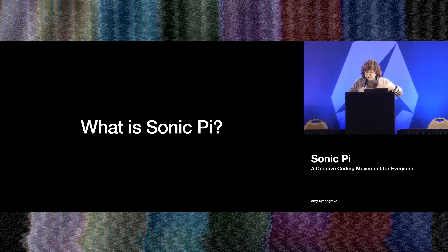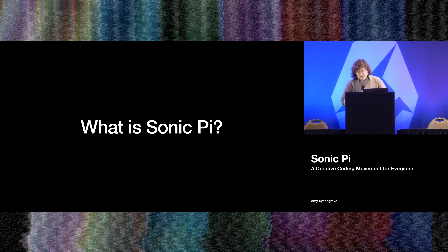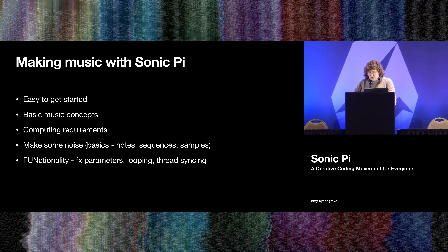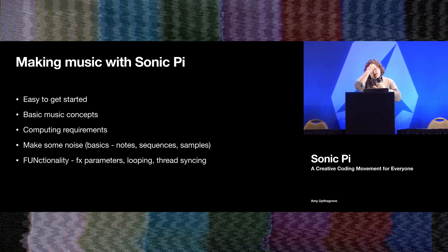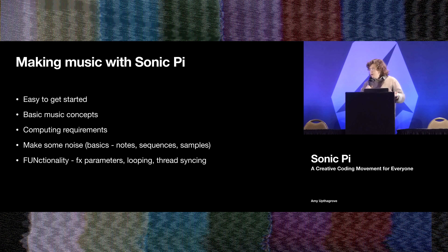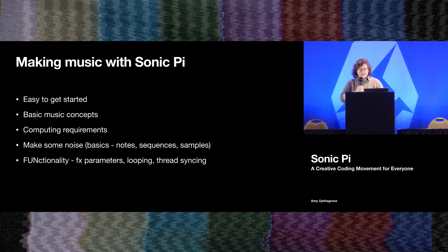Before I show you how to actually set up writing songs in Sonic Pi, let's talk about what exactly it is, how it works, and where it came from. It's a free download from SonicPi.net. It runs on Mac, Windows, Linux, and Raspberry Pi. All you need is something to type the code and an audio out — which is a pretty big departure from a full DJ setup with turntables. I'll also go over some basic music concepts and computing requirements before we make some noise.